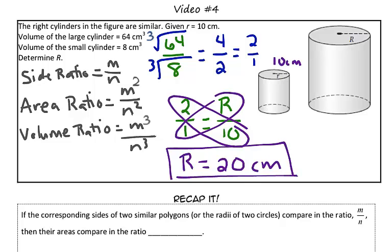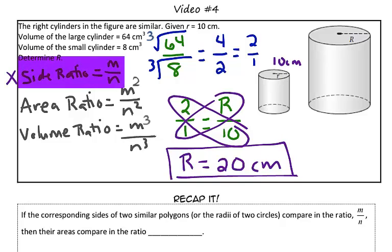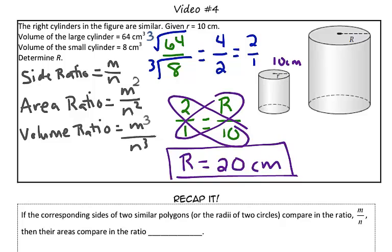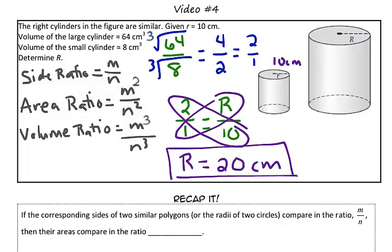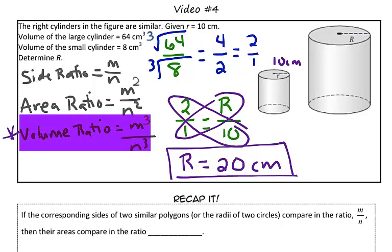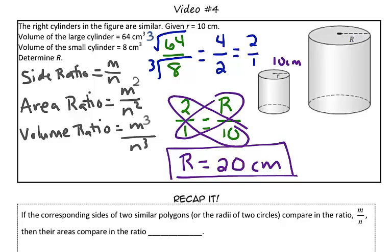So, remember, the important part of these problems is, if you're trying to find a corresponding part-side radius, you need to use the side ratio. If you're looking for the area of two similar figures, then you should use the area ratio. And if you are looking for the volume of similar figures, you need to use the volume ratio. Being able to use these ratios, you'll be able to set up proportions to solve for any of your missing links. Nice work!